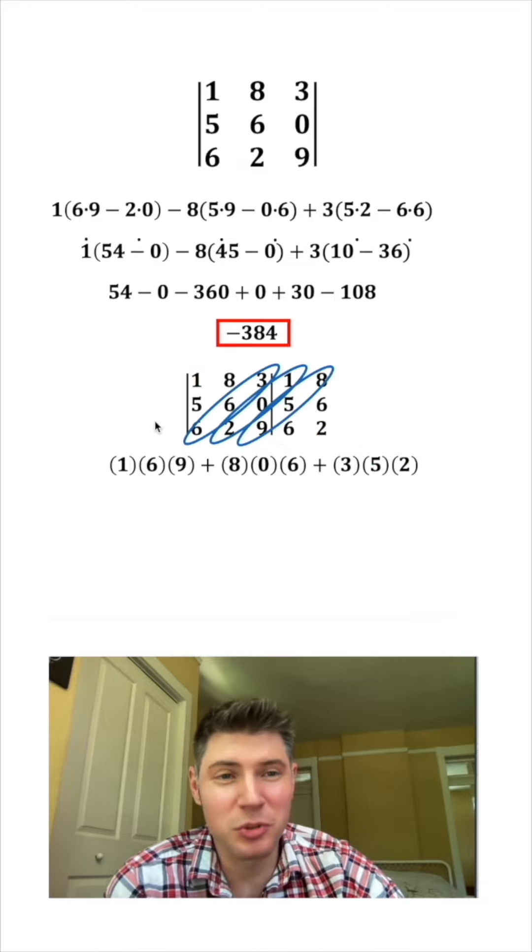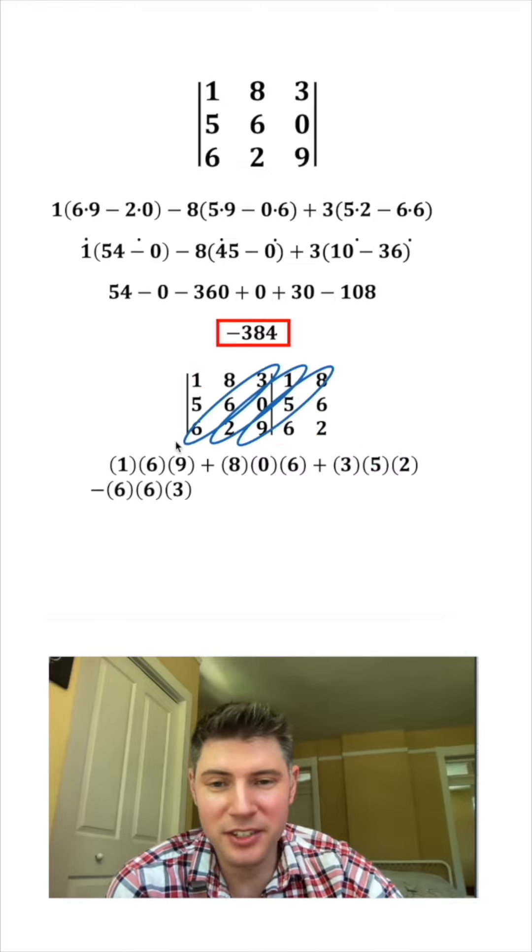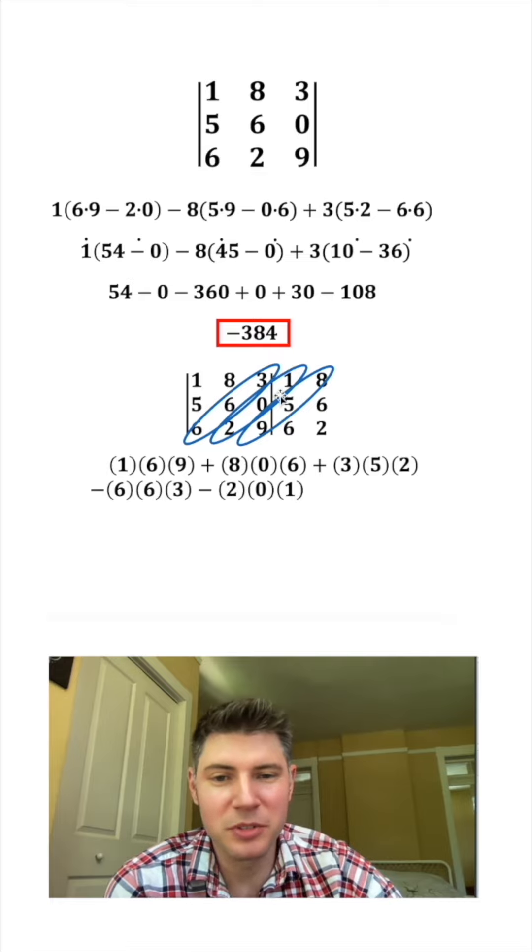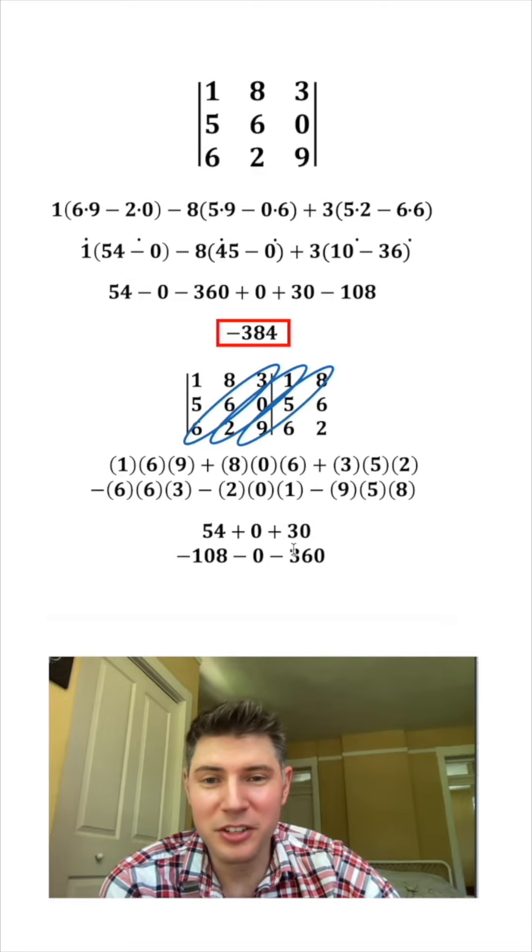And then you find these diagonals and you're gonna subtract each of these. You do minus six times six times three, minus two times zero times one, minus nine times five times eight.